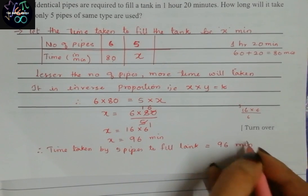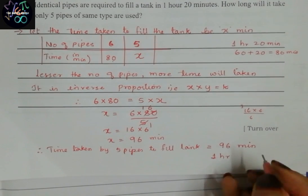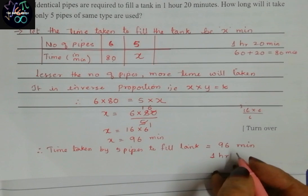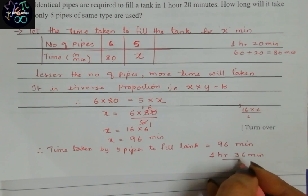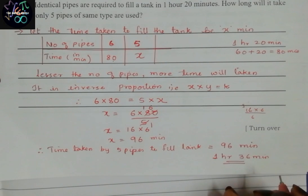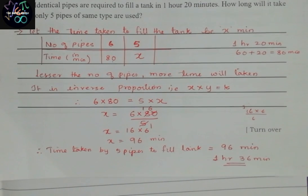Let us write in sentence form. Therefore, time taken by 5 pipes to fill the tank is 96 minutes, that means 1 hour 36 minutes. So this completes question number 26.